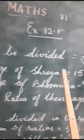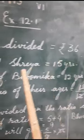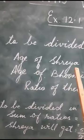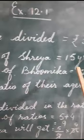This question will be done in the same way. Money to be divided is rupees 36. Age of Shreya is given as 15 years and age of Bhumika is given as 12 years. Let me show you.